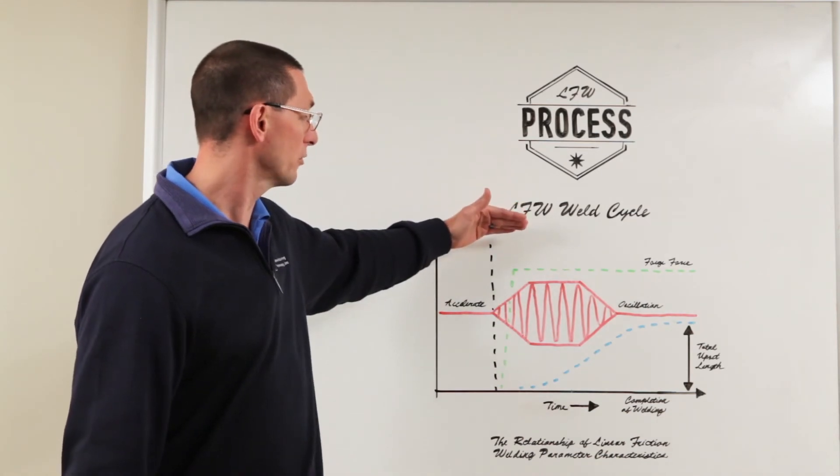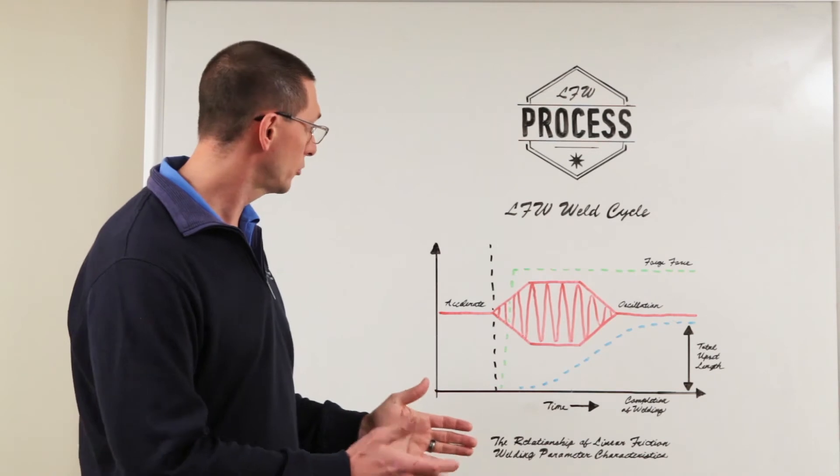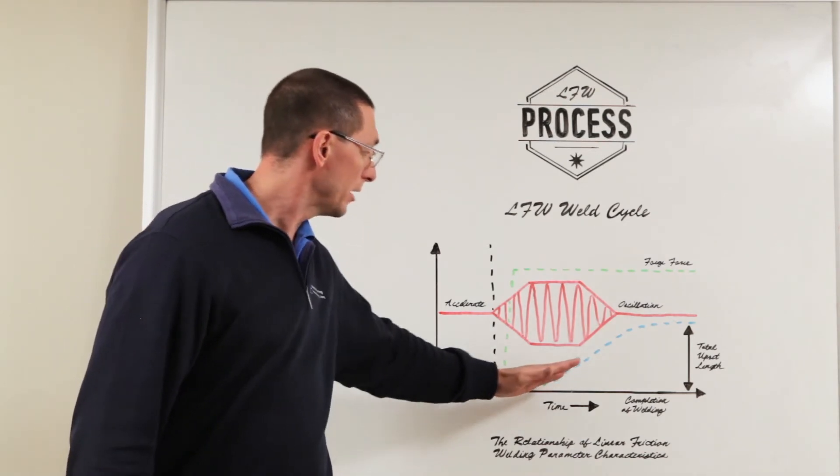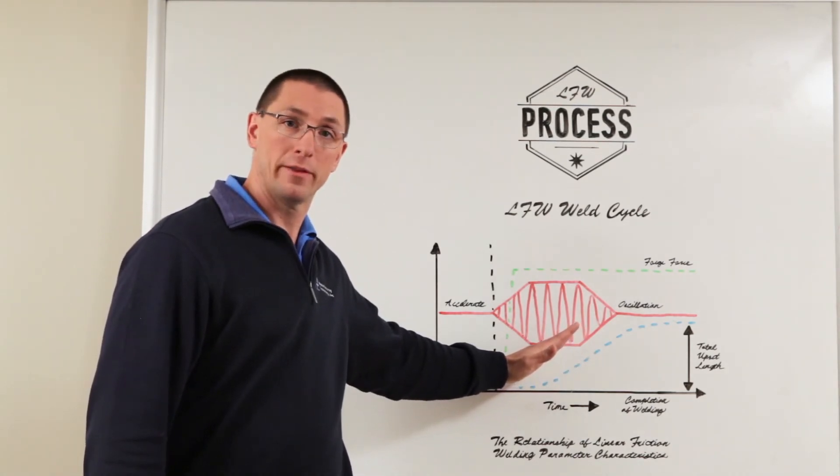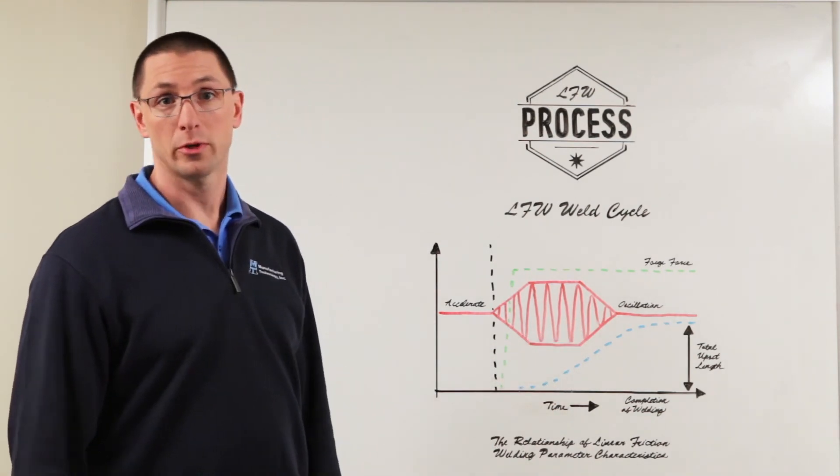Conversely we could increase the amount of forge force that we apply. This would increase the power input and shorten the weld time, and it would increase the slope of the upset so we would hit that target upset sooner, shortening the cycle time.